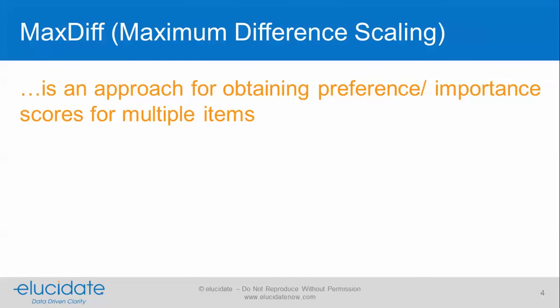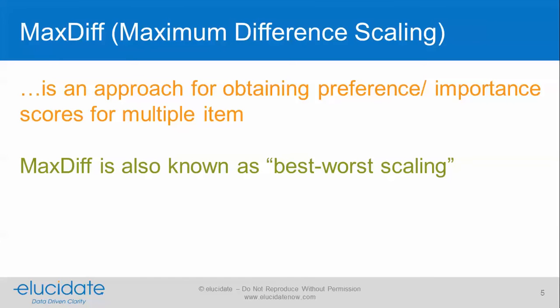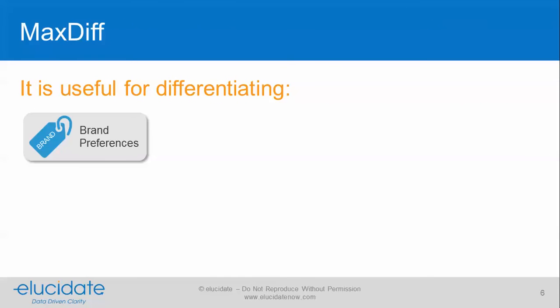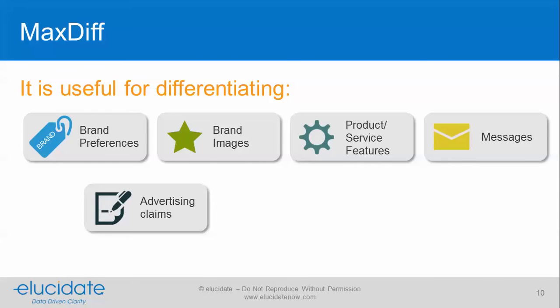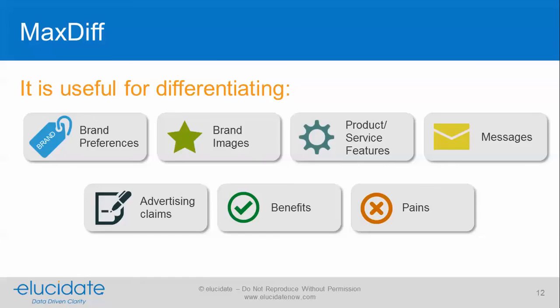MaxDiff, or maximum difference scaling, is an approach for obtaining preference or importance scores for multiple items. It's also known as best-to-worst scaling. MaxDiff is really good at differentiating brand preferences, images, product and service features, messages, advertising claims, benefits, and pains.